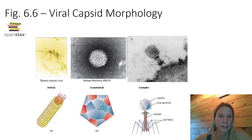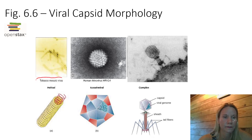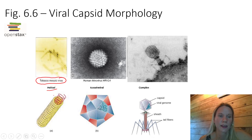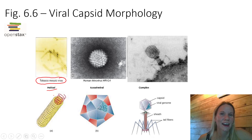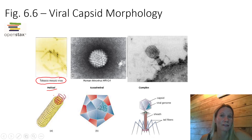So what we're looking at on this slide are some different morphologies or shapes to the viral capsid. On the far left we see an example of a helical capsid - this is the tobacco mosaic virus, an example of a helical capsid. The tobacco mosaic virus actually infects the tobacco plant. And I think it's important for you to know that viruses infect other cells besides human cells. Viruses are little infectious particles of nucleic acid that invade plants, animals, bacteria, and fungi.